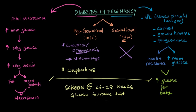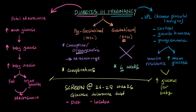If a woman is diagnosed with diabetes during her pregnancy, we do our best to control it with diet first, and if that doesn't work, insulin is our second line of treatment. It's also important to know that gestational diabetes increases the risk of a woman having overt diabetes after the pregnancy is over, so it's really important to follow up with these women after they deliver — typically at six weeks after delivery to test them for diabetes.